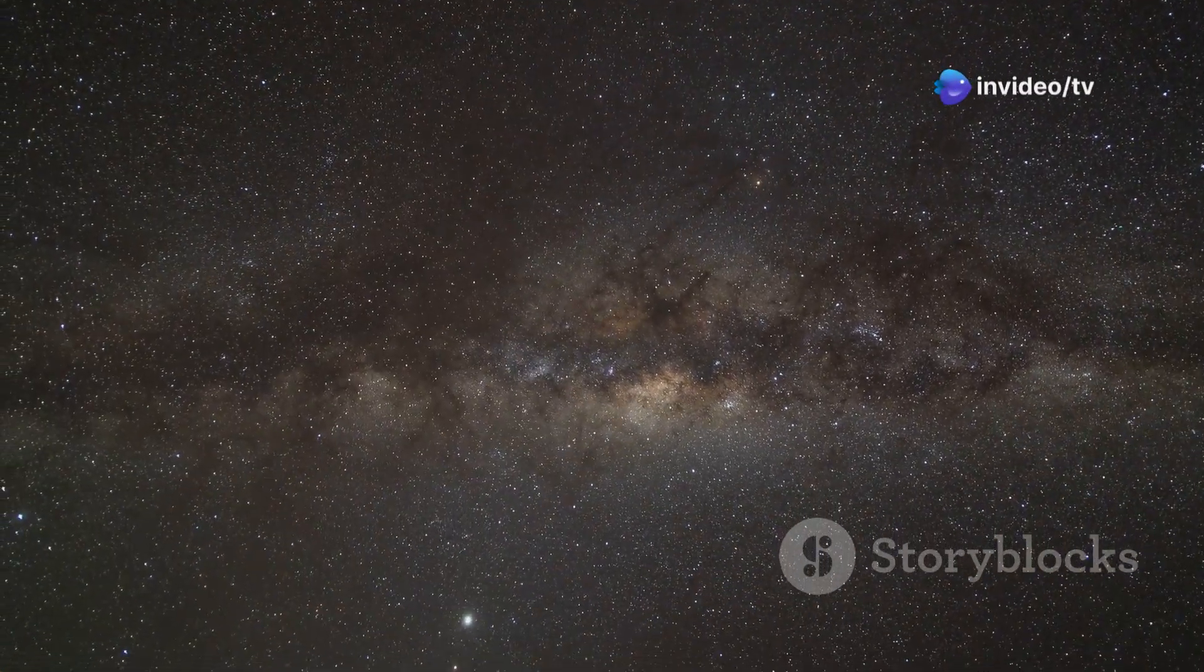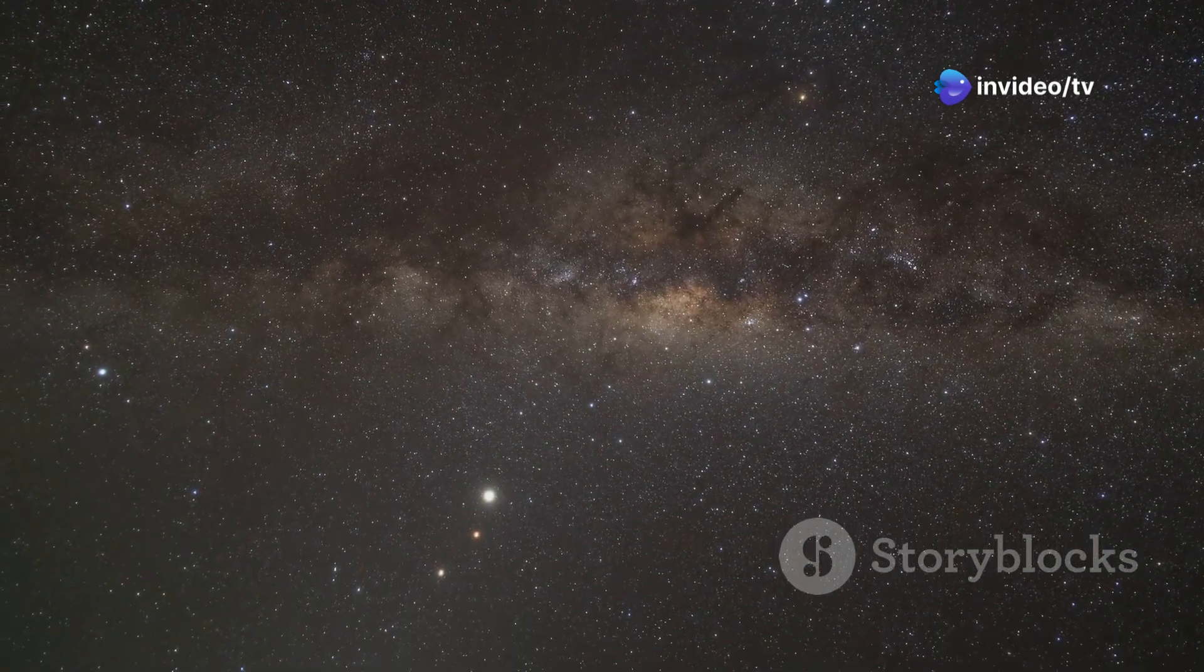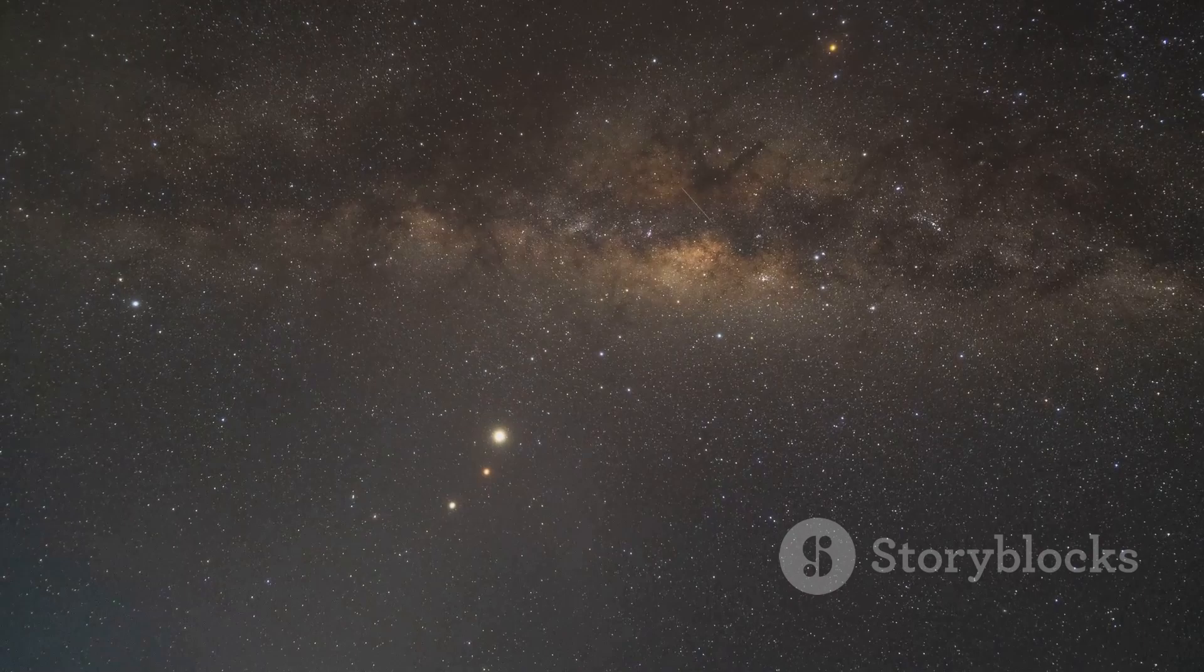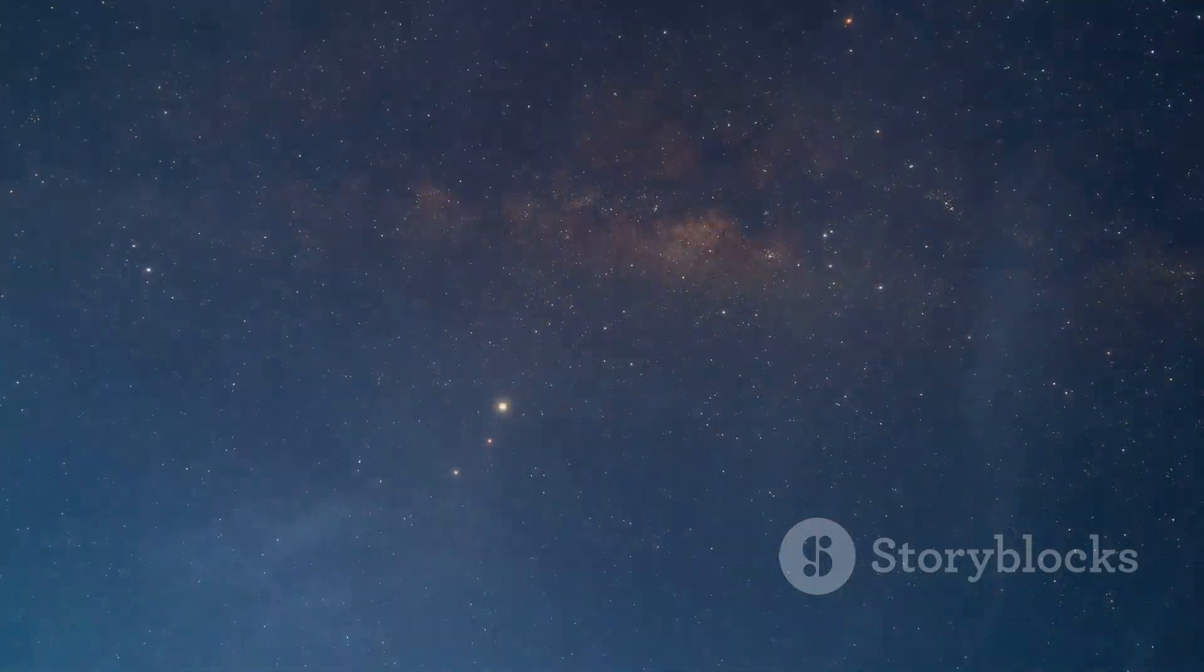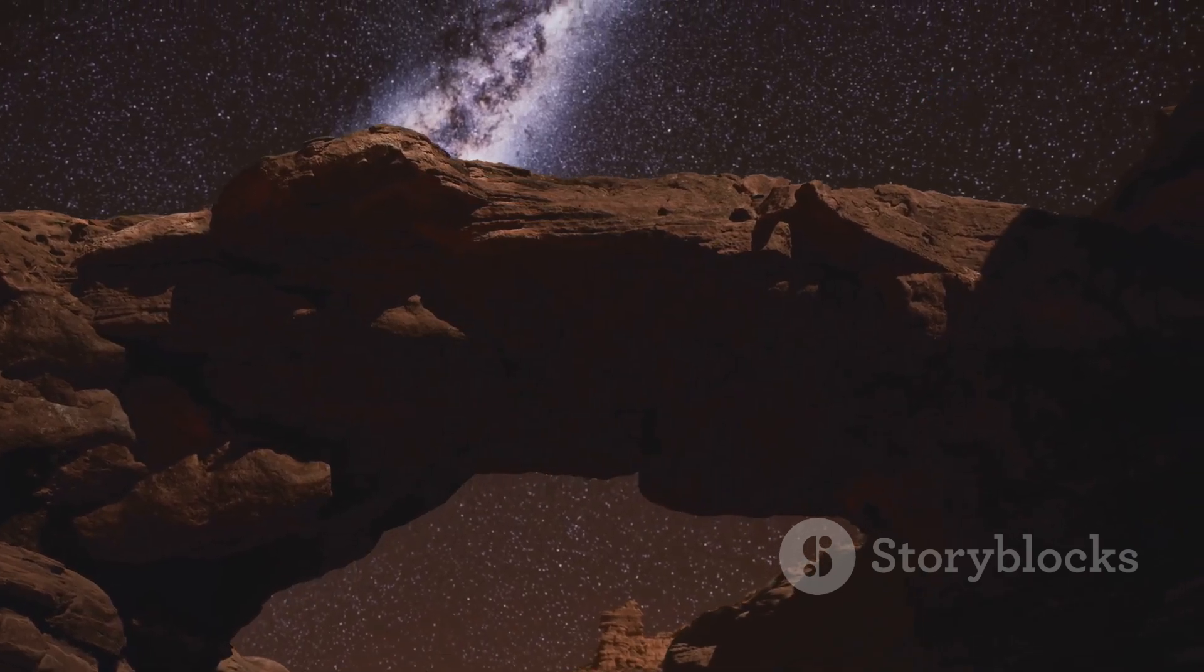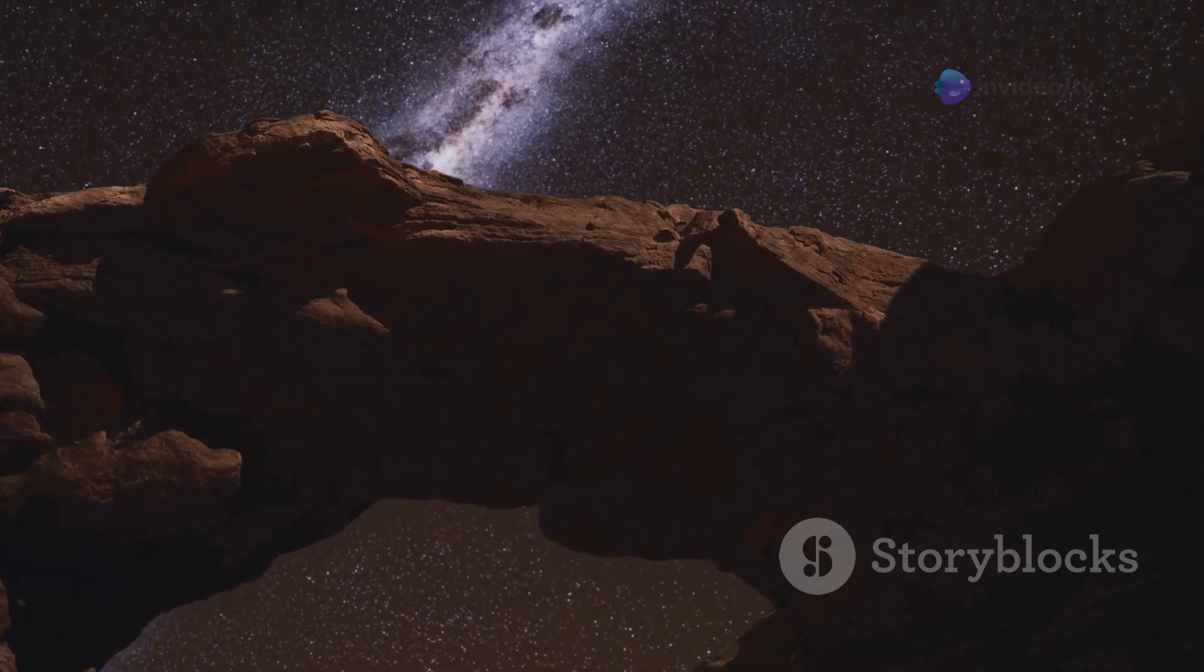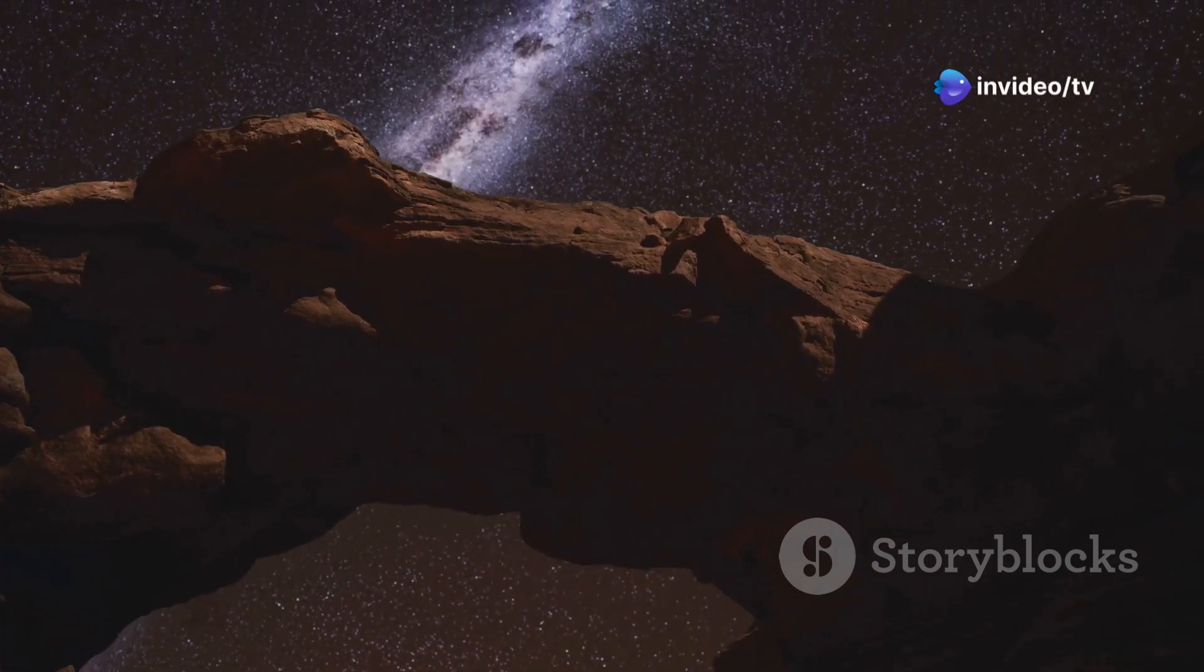Our solar system resides in one of the Milky Way's minor spiral arms called the Orion Arm. This arm is a fascinating region of our galaxy, filled with a mix of young hot stars and older cooler stars. It's a place where star formation is actively taking place. It's also sometimes called the Orion Spur because it's thought to be a bridge of gas and stars connecting two larger spiral arms: the Perseus arm and the Sagittarius arm.